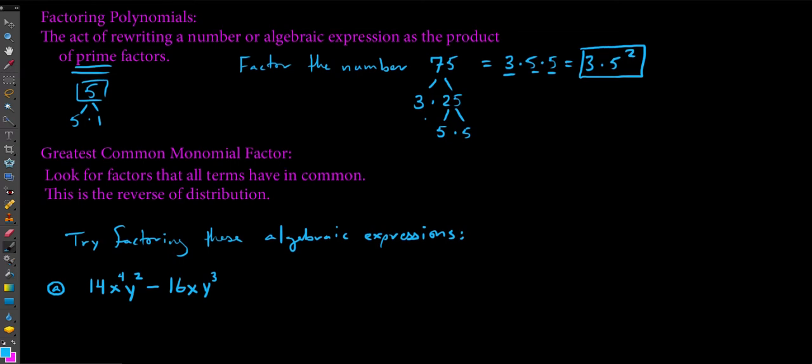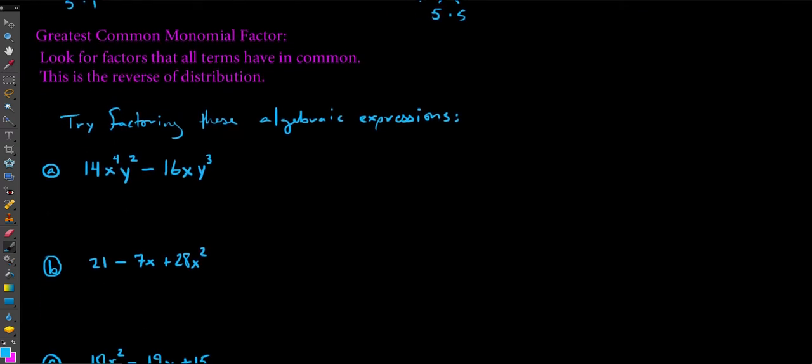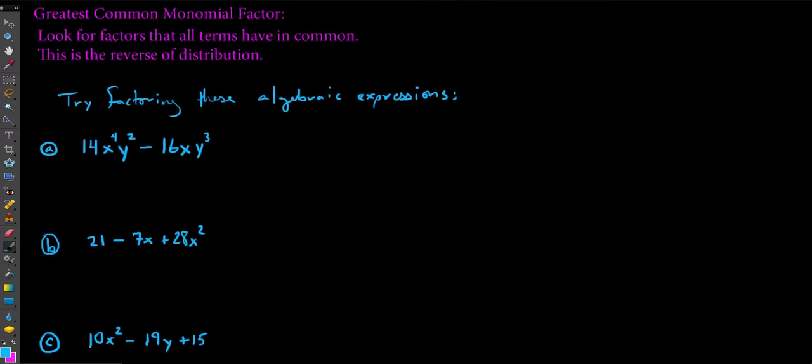So the very first pattern we're going to look at in terms of factoring, and this is always kind of the first thing we do look for, is what we call a greatest common factor or a greatest common monomial or one-term factor here. So I'm just going to write this as GCF. This is something that I expect you guys to be able to check for every instance where we factor. We're really looking for factors that all terms have in common. One thing that I write here is this is kind of like the reverse of distribution. So when I say try to factor these algebraic expressions below, let's take a look at letter A.